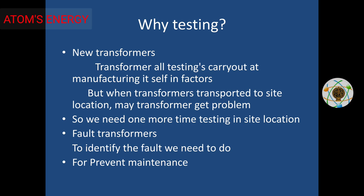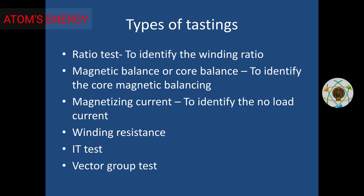In the previous year, we test the same values. If a transformer shows no correct value, in the next year we can compare. If differences are found over time, we check the preventive maintenance. The types of testing include: magnetic balance, core balance, magnetizing current, winding resistance, IR, and tan delta test.